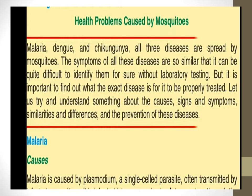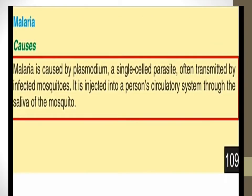First of all we will discuss malaria. The sign and symptom: when a person has malaria, sometimes the infected red blood cells become stickier than usual and clot easily, which can lead to stoppage of blood flow to the brain and cause cerebral malaria.